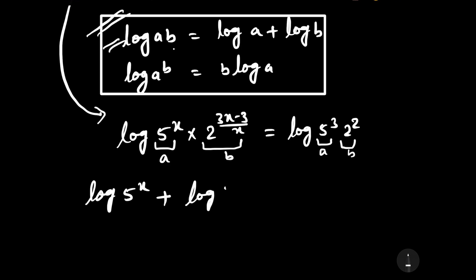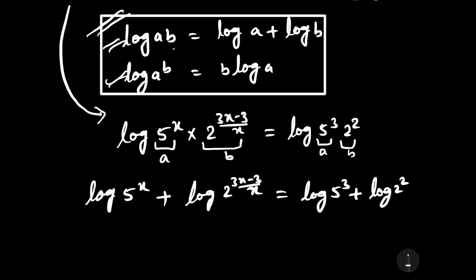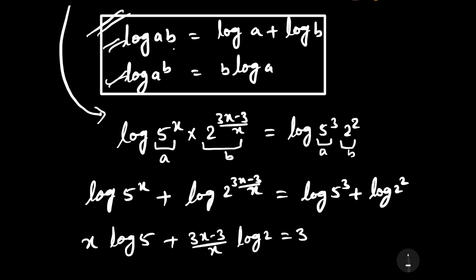With the help of the log formula, this becomes: log 5 to the power x plus log 2 to the power (3x minus 3) upon x, is equal to log 5 to the power 3 plus log 2 to the power 2. Further, using the power rule, this can be written as x log 5 plus (3x minus 3) upon x times log 2, equal to 3 log 5 plus 2 log 2.